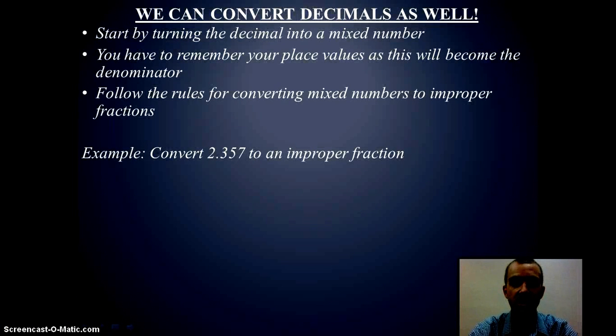Now we can convert our decimals as well. We want to start by turning that decimal into a mixed number. Anything to the left of the decimal place will always be the whole number, and then everything to the right will be our fraction. Now we have to pay attention to what are our place values to be able to convert this properly. And then we can follow our steps just as we would for changing mixed numbers to improper fractions.